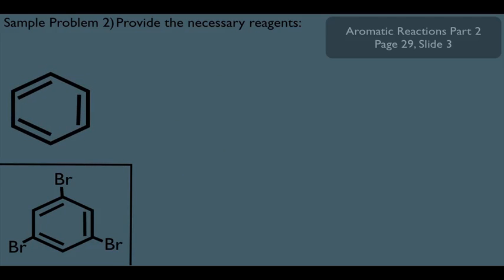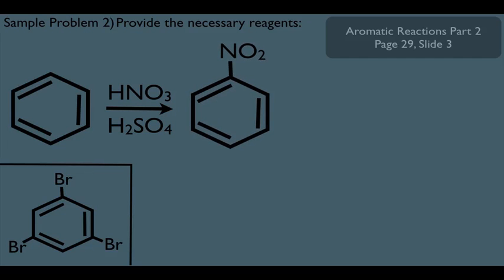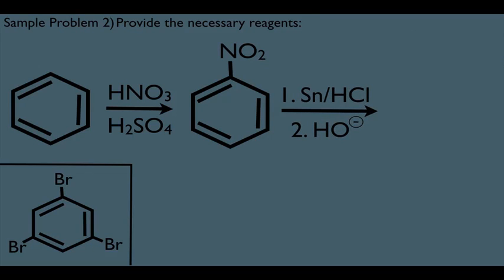Now, remember, what we're learning here is the strategy. Don't worry at this point if you wouldn't think to do something like this. Watch how I pull this off. The first thing I'm going to do is add HNO3 H2SO4, which, remember, puts the nitro group on a benzene ring. And then I'm going to add the SnHCl/OH. Remember, that turns the NO2 group into an amine NH2 group.